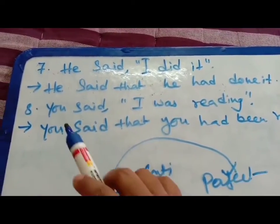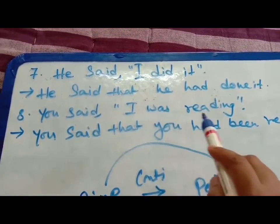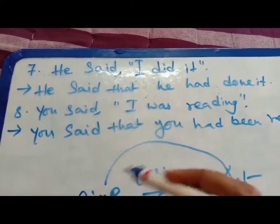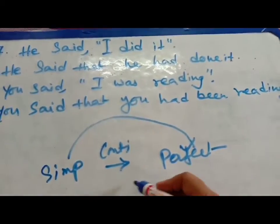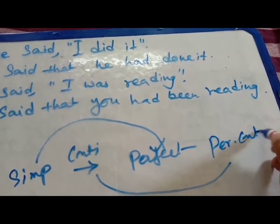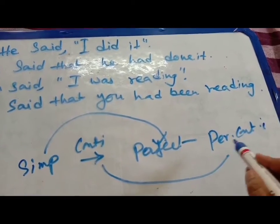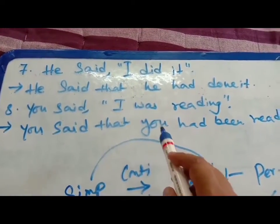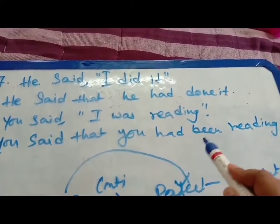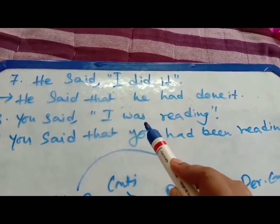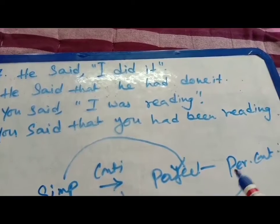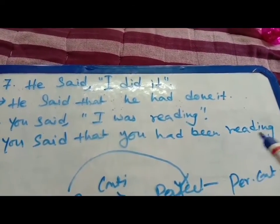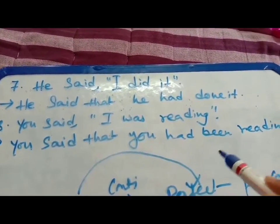Number eight: You said, I was reading. Said is simple past and I was reading is past continuous. Since the reported verb is in past continuous, we jump one step to past perfect continuous. From continuous, one step becomes perfect continuous. So: you said that you had been reading. Was reading becomes had been reading because it is now past perfect continuous.